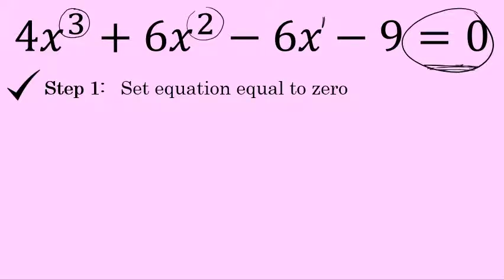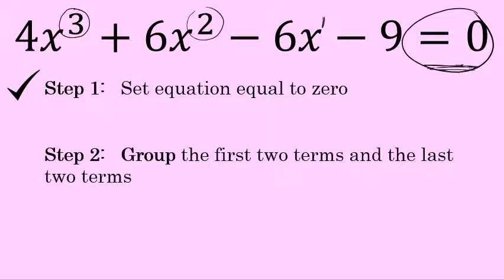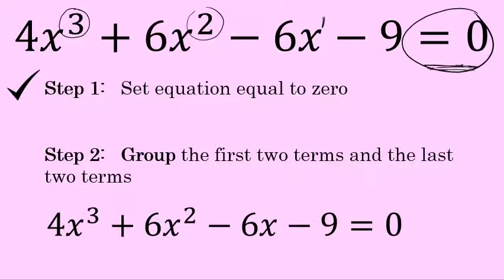We're on to step 2, which is to group the first two terms and the last two terms together. Group the x to the third and the x to the second terms together — the first two terms. And the last two terms, the x to the first and the constant, are going to be grouped. That's where this method gets its name: factor-by-grouping.